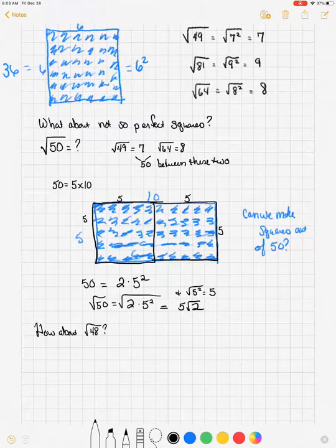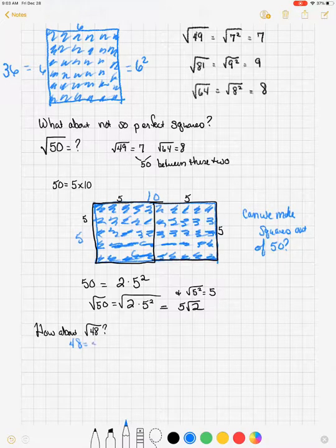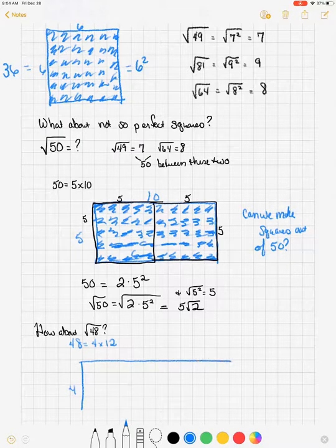What about the square root of 48? 48 is 4 times 12. So let's try a 4 by 12 rectangle.